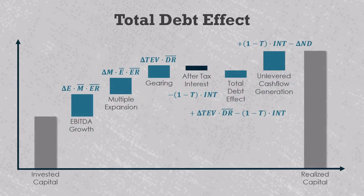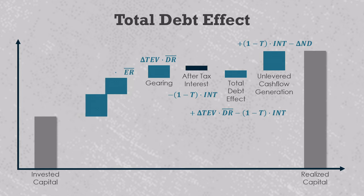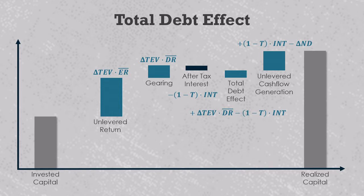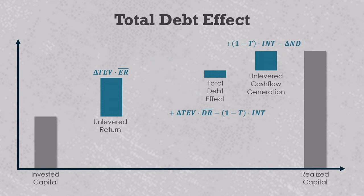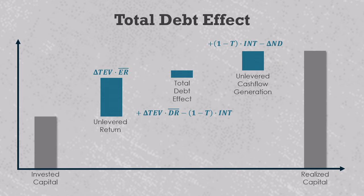This gives us the following value bridge. As you may recall, EBITDA growth and multiple expansion always add up to a deal's unlevered return, which is the product of the enterprise valuation change and the average holding period equity ratio. And then on the right, we can get rid of the redundant terms, which leaves us with three value drivers. The unlevered return on the left gives us the equity return without debt's amplification of gains and losses. Unlevered cash flow generation on the right tells us how much cash flow would have been generated if there wasn't debt. And the total debt effect in the middle gives us the combined impact of debt's amplification and its interest payments. This is a pretty interesting simplification of the traditional value bridge.